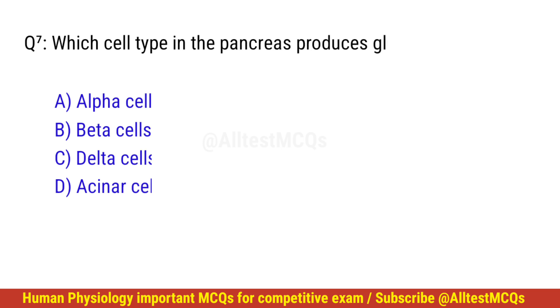Question number 7. Which cell type in the pancreas produces glucagon? The right option is A: Alpha cells.